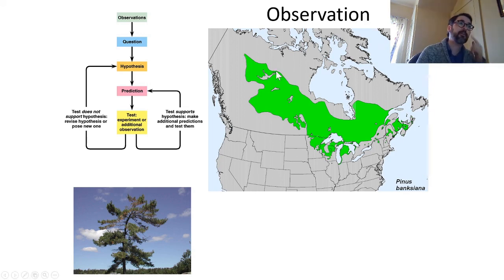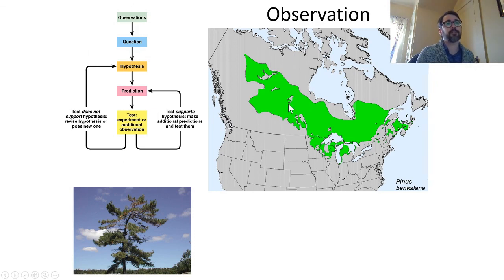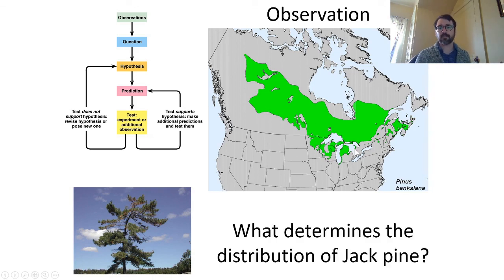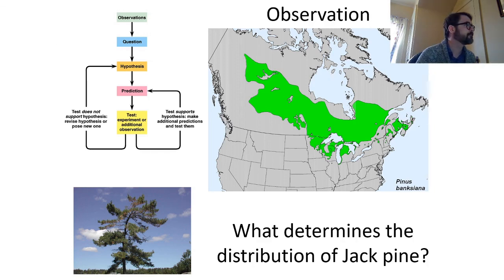The scientific method starts with an observation that leads to a question, then a hypothesis, a prediction, data collection or experiment, and either confirmation or rejection of the hypothesis. Here's our observation: all the jack pine in the world is found within a specific green area. What determines that distribution? Take a moment — there's a survey below. Rank what you think is the most important factor controlling the distribution of jack pine, and we'll pick up with part three of lecture one.